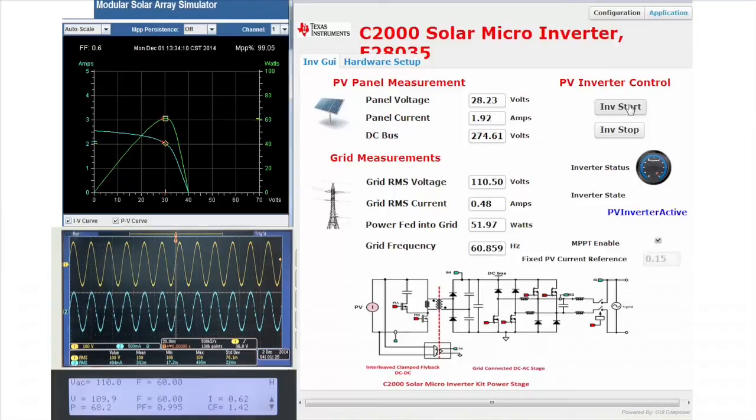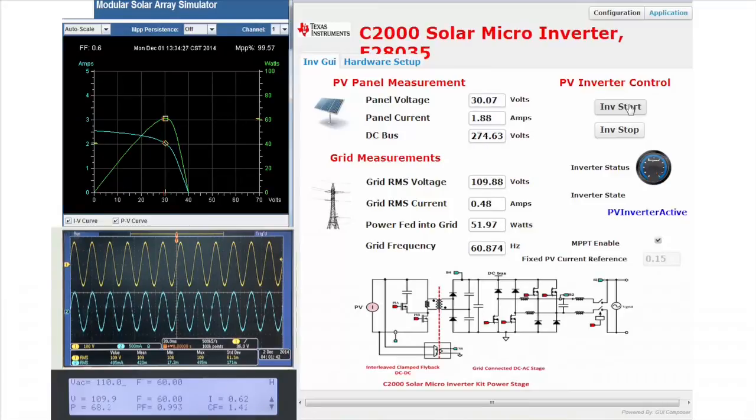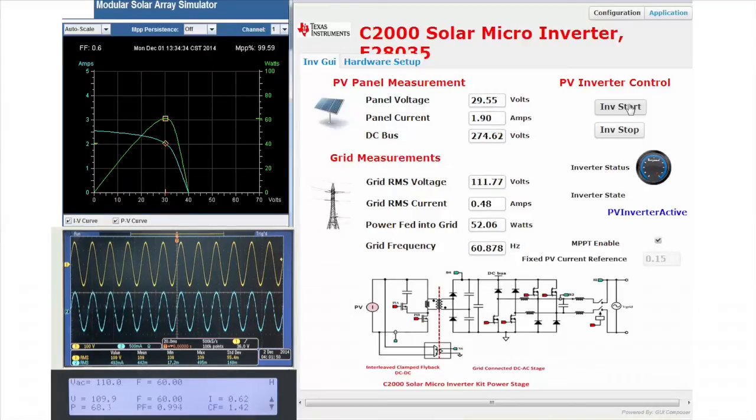In this test, the PV panel emulator characteristics are fixed and hence the tracking efficiency is called static MPPT efficiency. We see the DC bus is being regulated properly. On the oscilloscope, we can see the steady state waveform of the grid voltage and current. We see a clean current waveform that is in phase with the grid which shows good control of the grid current.